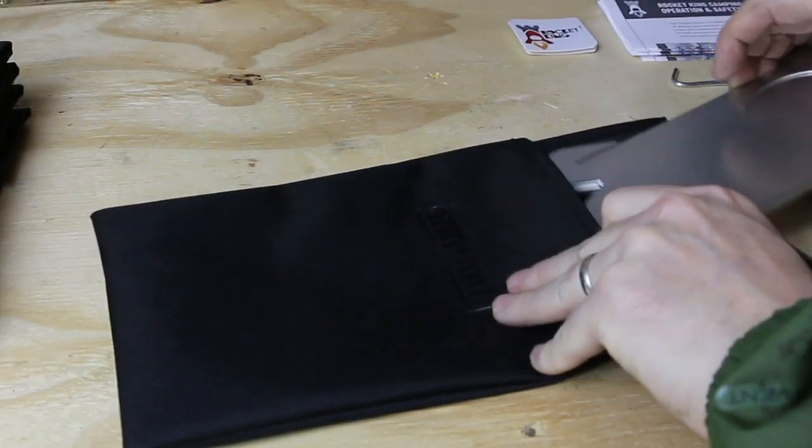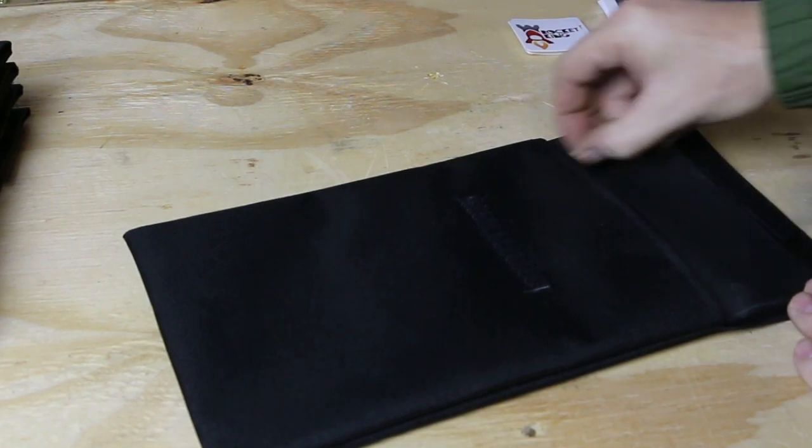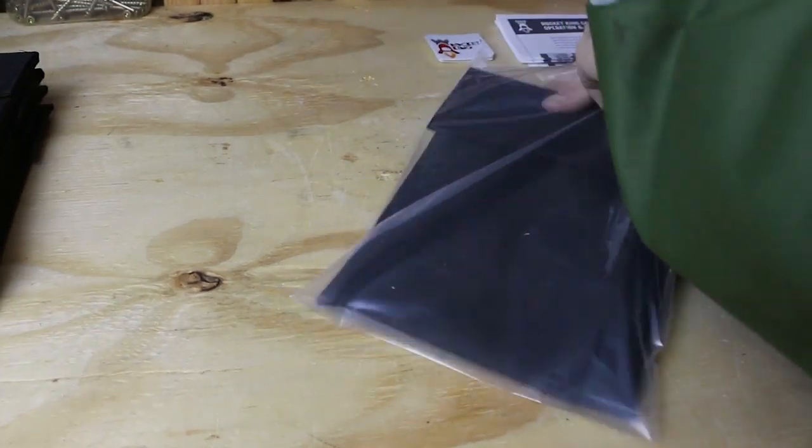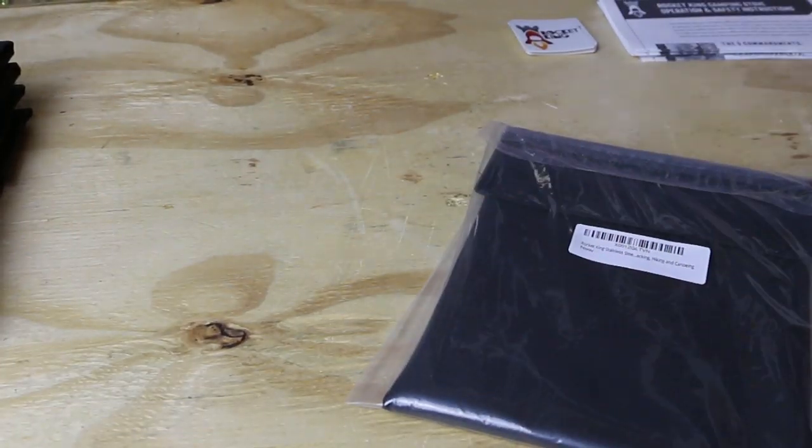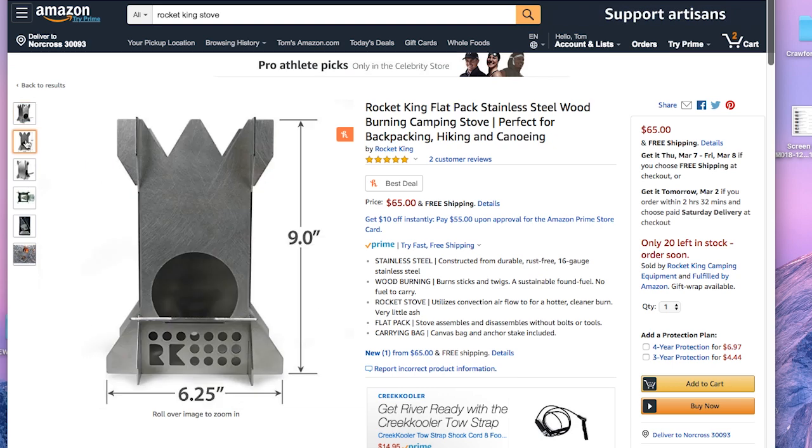Then, the stove parts go in their custom-made bag with the directions, a sticker, and a stake. Then they get bagged, coded with their Amazon number, and boxed for shipment. If you are interested, I'll put the link to the stove on Amazon below.